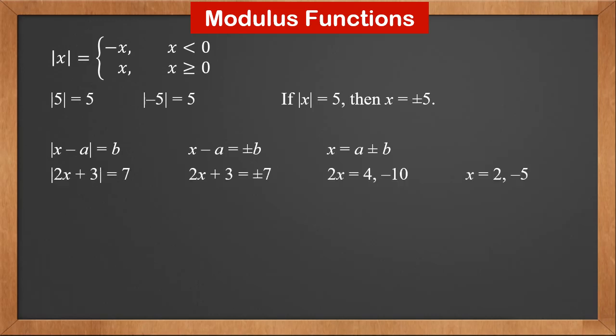For example, solve |2x + 3| = 7. We get 2x + 3 is plus or minus 7, so 2x is either 4 or minus 10. Therefore x is 2 or minus 5.